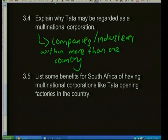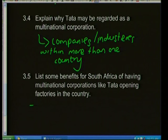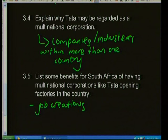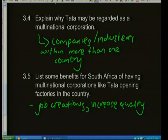Question 3.5: List some benefits for South Africa of having multinational corporations like Tata opening factories in the country. Very importantly, it creates jobs — for any developing country heading towards becoming developed, job creation is one of the most important things. Job creation can increase quality of life: people earn income, can provide housing, and unskilled laborers can be trained and turned into skilled laborers. There are numerous benefits.